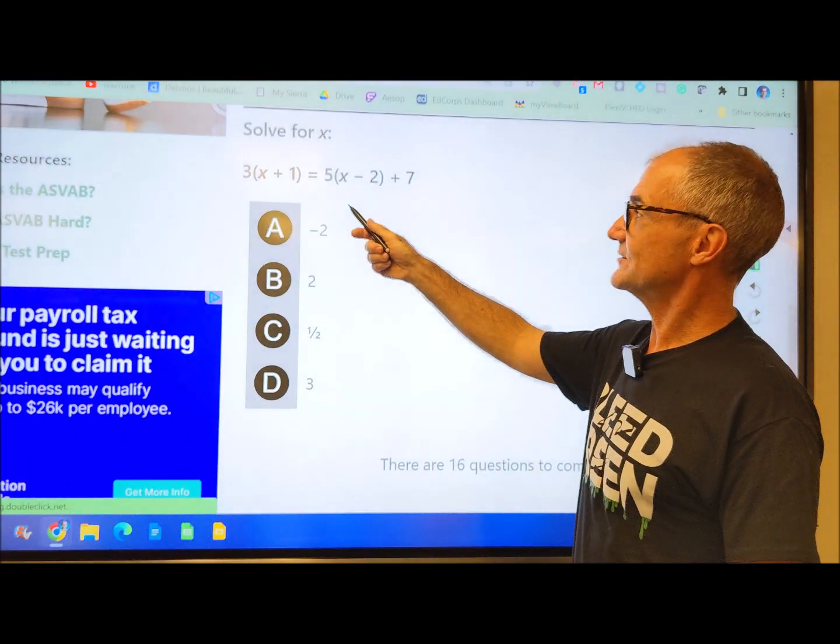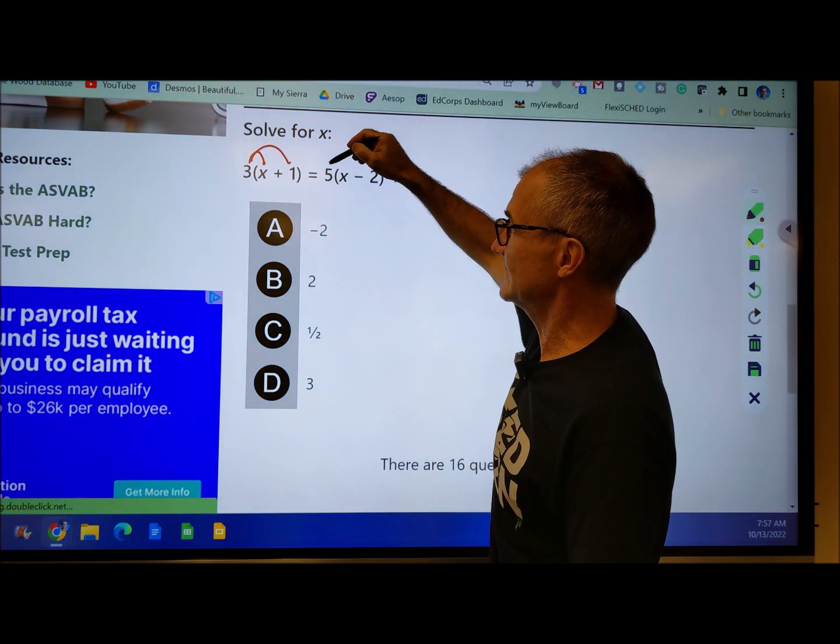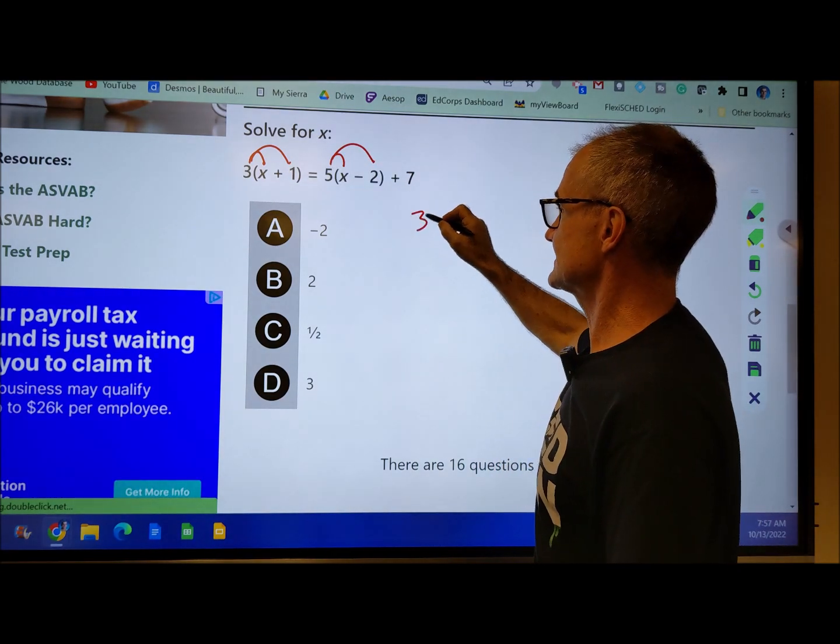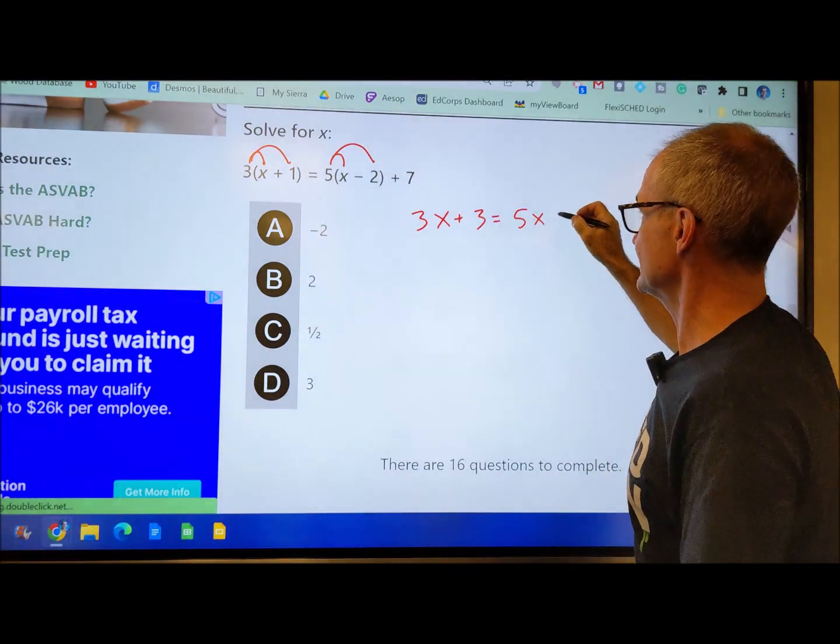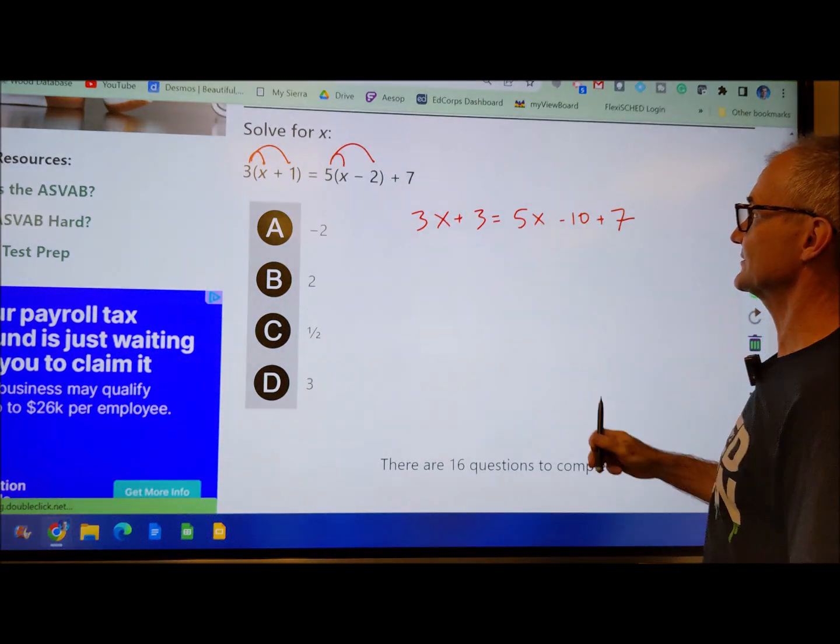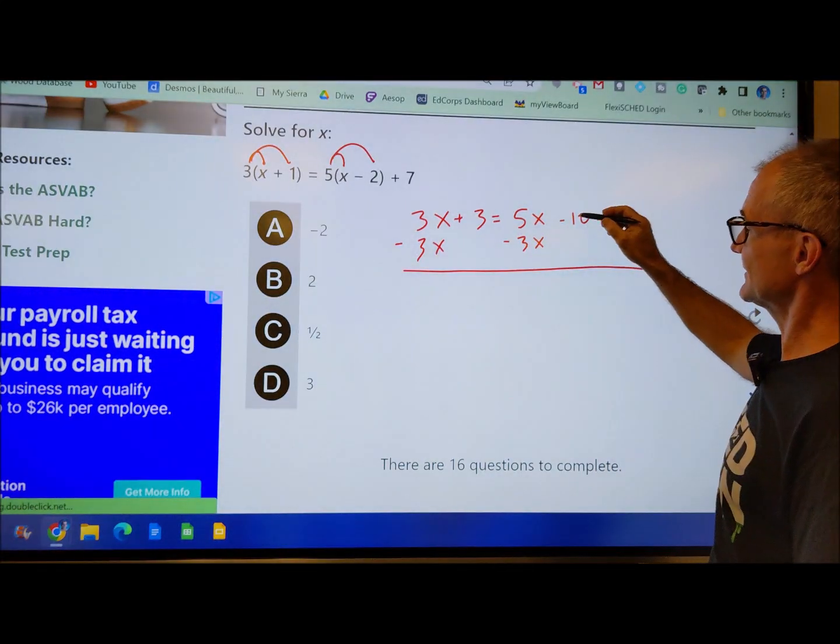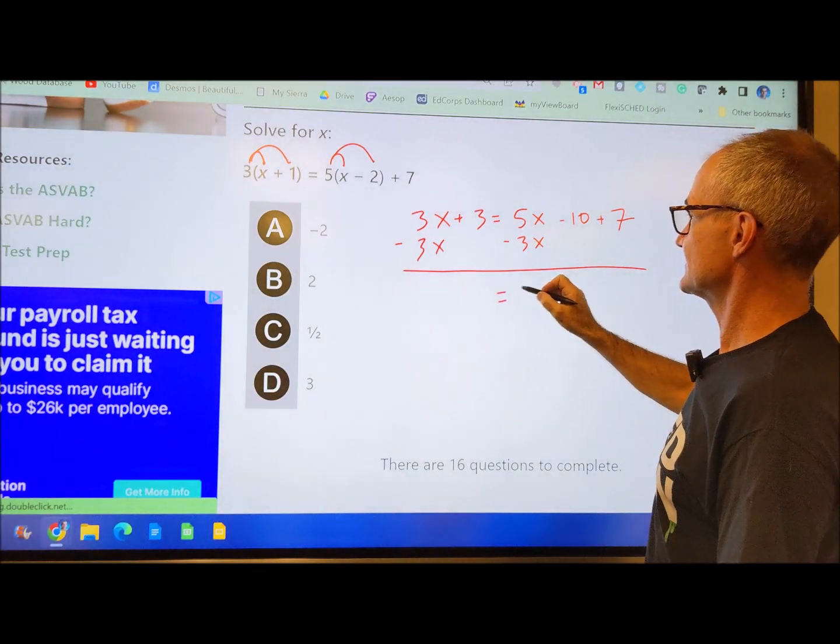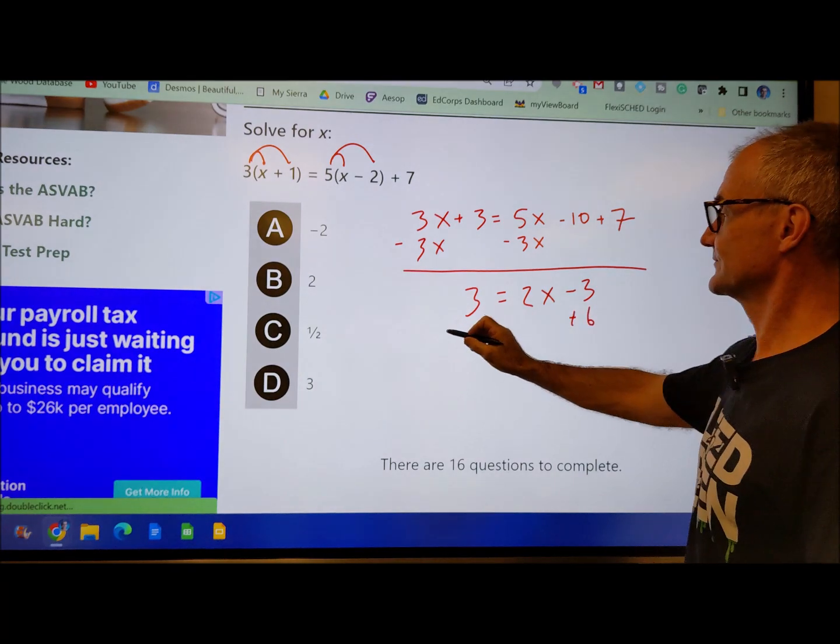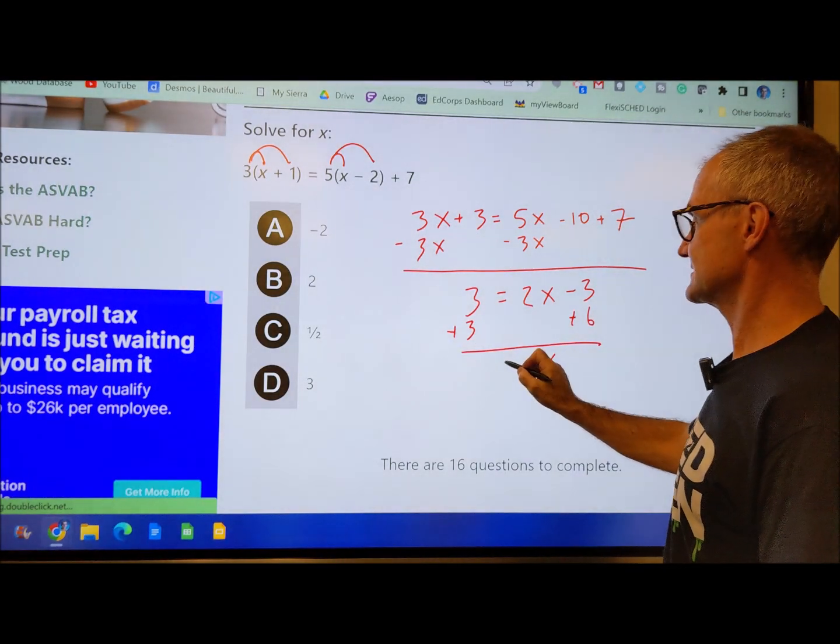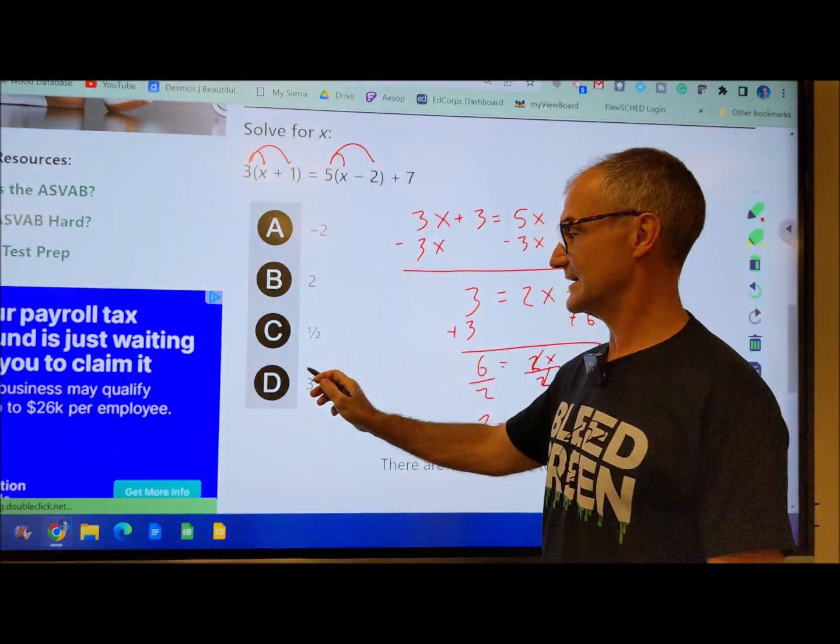Next problem is solve for x. This is just a check of algebraic understanding. The first thing you have to do is distribute 3 through the quantity there, and 5 through the quantity there. So 3 times x plus 3 times 1 equals 5 times x, 5 times negative 2 plus 7. I need to combine similar terms. Here's a 3x and a 5x, I'm going to subtract that from both sides. And then I'm still going to combine these, negative 10 and 7 is negative 3. So I have 2x minus 3 over here, and I have this 3 over there. Add 3 to both sides. Now I have 2x equals 6. Divide both sides by 2, and I get a value for x, 6 divided by 2, a value for x of 3.